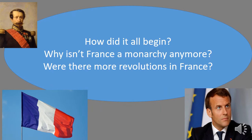But how did it all begin in France? You have two pictures there. At the top left, Napoleon — Louis Napoleon Bonaparte — another Napoleon Bonaparte. And on the bottom right, the current president of France, François Macron. Were there more revolutions in France? We are going to start with the July Revolution in France, the révolution de Juillet in French.